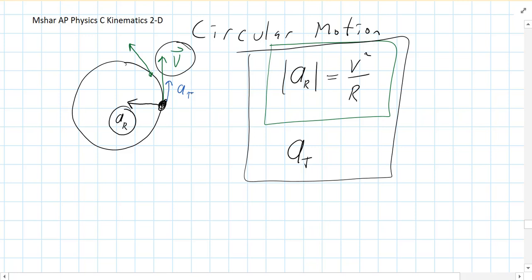And as the name indicates, tangential means tangent to the circle. It's going to be edgewise to the circle. Whereas radial acceleration, as the name indicates, is along the radius.